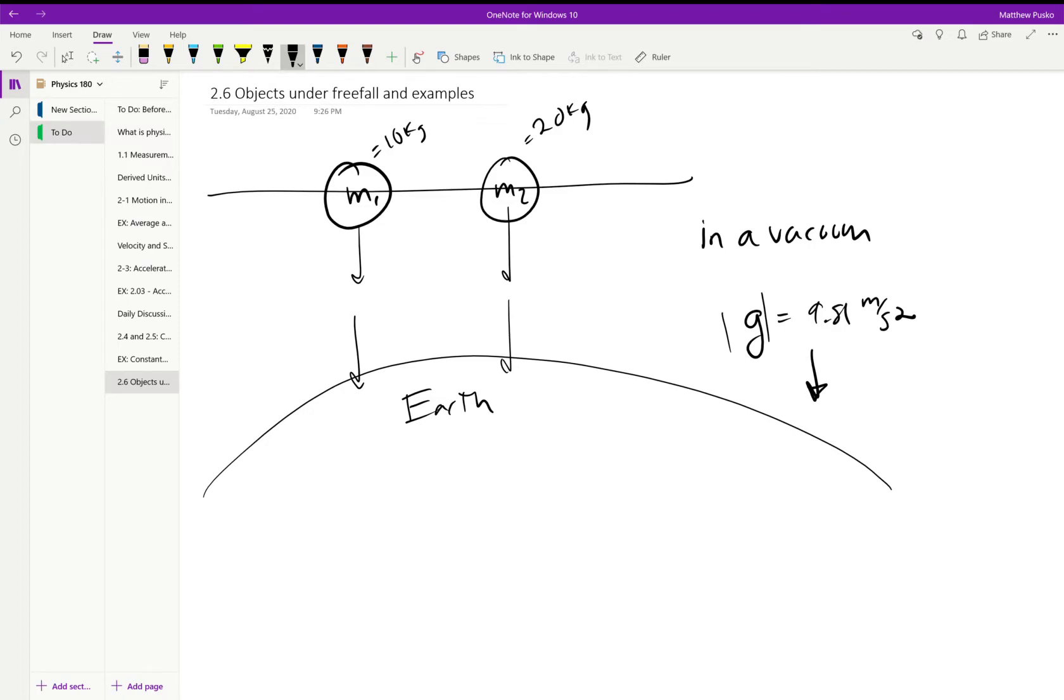Once we get into gravity itself a little bit more I'll show you where that number comes from, but basically they're going to hit at the same time. Galileo actually figured out a lot of this first by taking a ball.